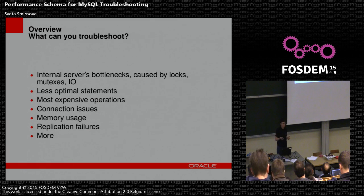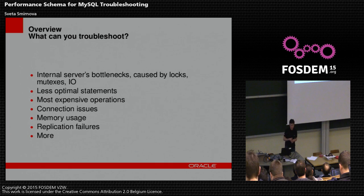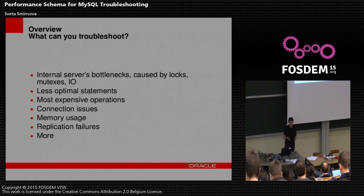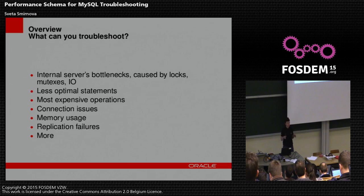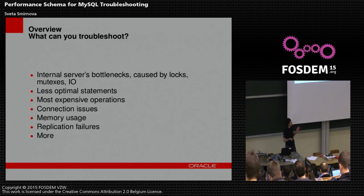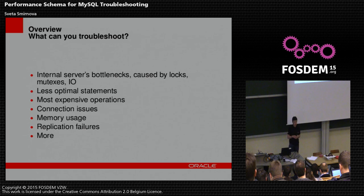In the very first version it was only this instrumentation, and it required quite a knowledge of MySQL server internals. But in version 5.6, Performance Schema developers turned to face DBAs who don't know MySQL server code by heart, and created instrumentation for troubleshooting statements, stages — which is like what you see in SHOW PROCESSLIST — and connection issues. Then in 5.7, there are new amazing features: metadata lock instrumentation, memory usage instrumentation, replication-related tables, and more — it's still growing.